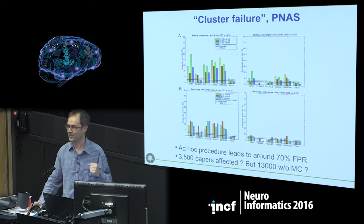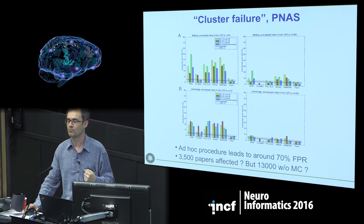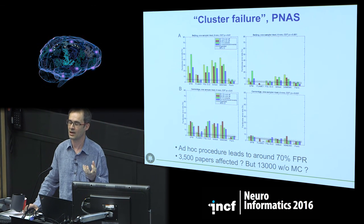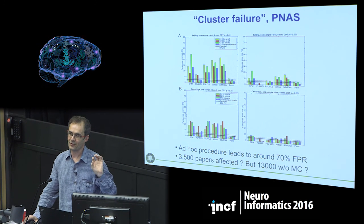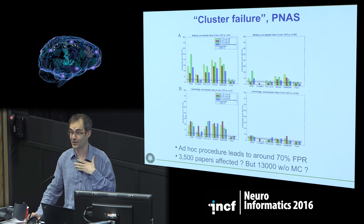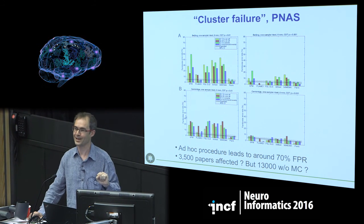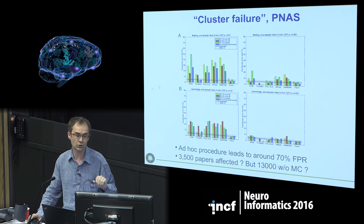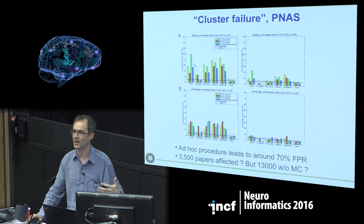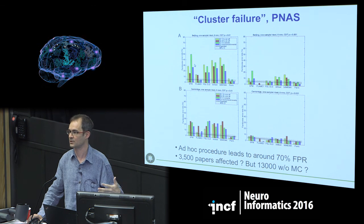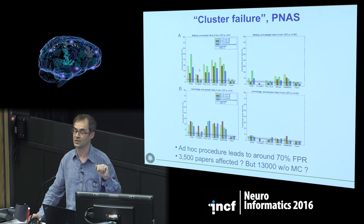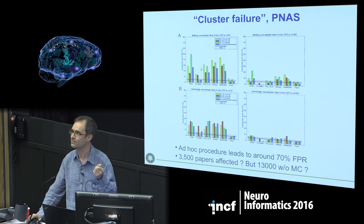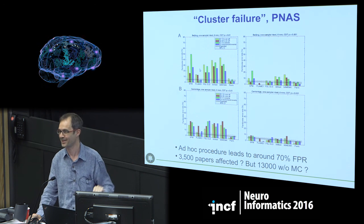A very recent PNAS paper looks at the problem of cluster size tests in fMRI data - how do you detect an activated region in the brain? They show a very large false positive error rate when you analyze data where there shouldn't be activation but you find significant clusters. The key result, in my opinion, is that there was a software with a very bad default in terms of how you set up that test, and everybody was using that software.